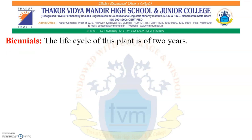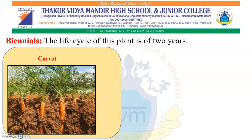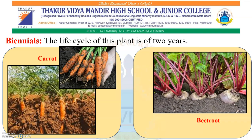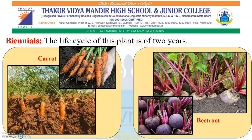Bi-annual plants: the life cycle of this plant is of 2 years. As the name suggests, 'bi' means 2, so plants having a life cycle of 2 years are called bi-annuals. Examples include carrot and beetroot.